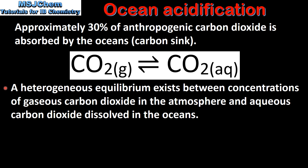A heterogeneous equilibrium exists between concentrations of gaseous carbon dioxide in the atmosphere and aqueous carbon dioxide dissolved in the oceans. This equation shows the equilibrium that exists between gaseous carbon dioxide in the atmosphere and aqueous carbon dioxide dissolved in the oceans.